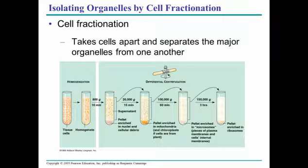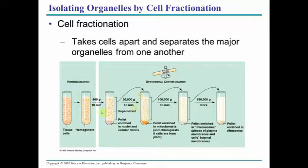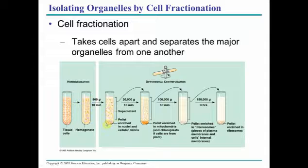We can separate the parts of cells through cell fractionation. You take a sample of your cells and blend them all up in a blender — homogenate them to get all the pieces broken out. Then you spin it down in a centrifuge at faster and faster speeds. Initially, the most dense things go to the bottom — we call it the pellet — and above it we have the supernatant, which is the fluid and anything floating in it. These are the nuclei and various other large structures, so if you want the nuclei, you could take that.